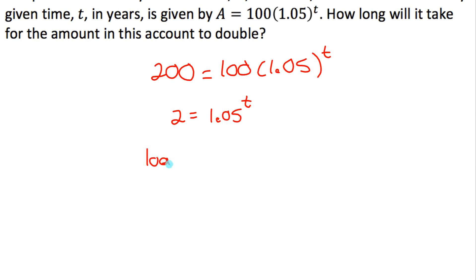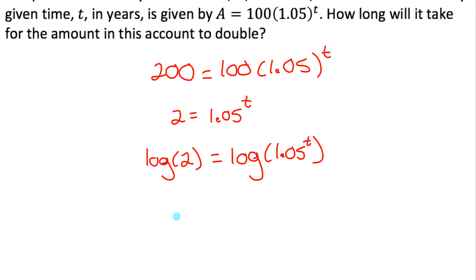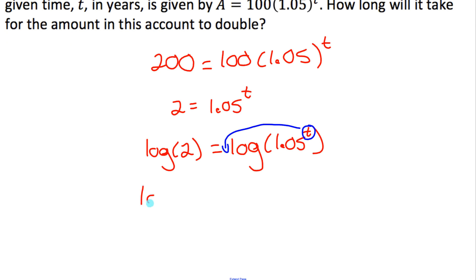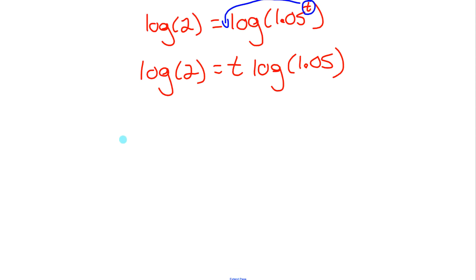Remember, when solving equations you can do whatever you want as long as you do it to both sides to keep the equation balanced. So I have log of 2 on the left equals log of 1.05 to the power of t on the right. Now the power rule of logarithms tells me: if the argument of the log is a power, I'm allowed to take the exponent and write it as the coefficient of the log. So I now have log of 2 equals t multiplied by log of 1.05.